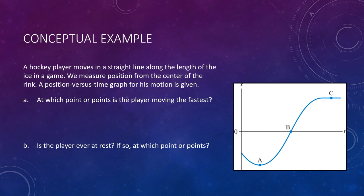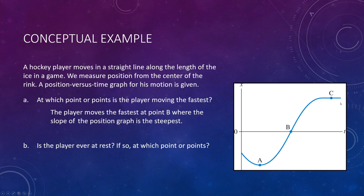Asking if the player is moving the fastest is the same as asking where the velocity is greatest. We're looking at a position versus time graph — the connection between a position graph and velocity is slope. The highest velocity means the steepest slope. At A, the slope is horizontal — zero. At B, it's pretty steep. At C, it's back to zero. The answer is B: the player moves the fastest at point B, where the slope of the position graph is steepest — the highest velocity.